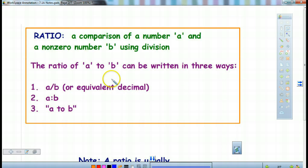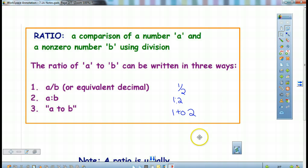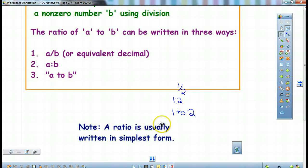So a ratio can be written as a fraction, A over B. It can be written with a colon, where A colon means to B. Or we can write it out in words, A to B. So if I have the fraction 1/2, I can write it as 1/2, I could write it as 1:2, or I could write it as 1 to 2. It is usually written in the simplest form. So make sure that say this was 2 to 4, we would want to reduce that to 1 to 2. Make sure that you're putting it in lowest terms.